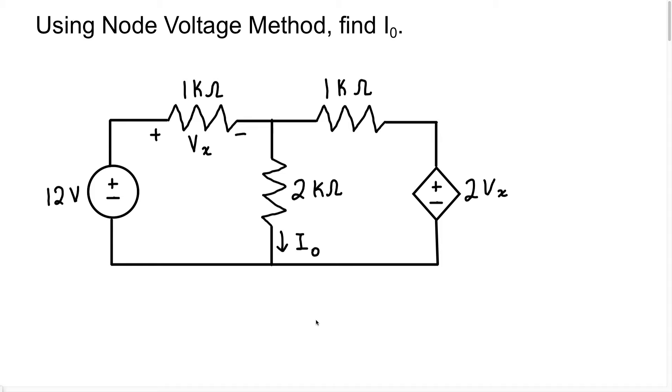In this video, they want us to use the node voltage method to calculate the current I_O, which is the current flowing through this 2K resistor here.